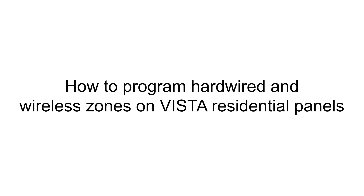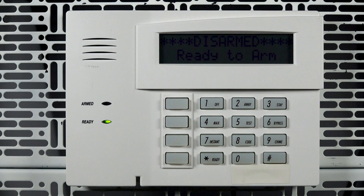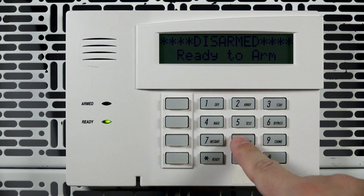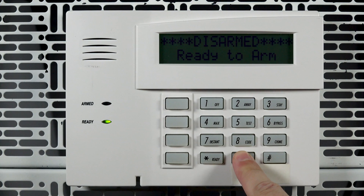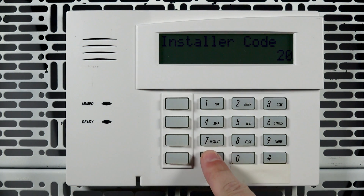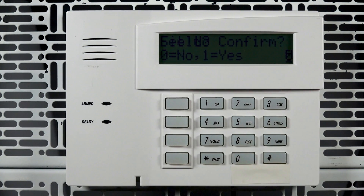Hi everyone. In this video, I want to cover zone programming on Vista Residential panels such as the 15P, 20P, and 21IP. To access panel programming, enter the installer code and then 800. Next, press Star 56 to enter zone programming.